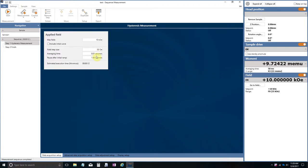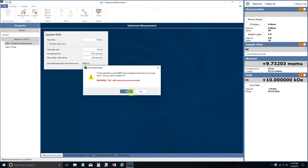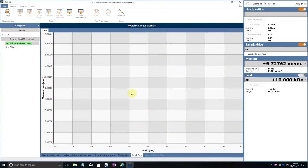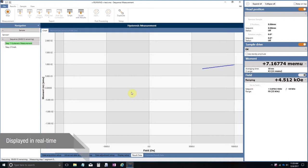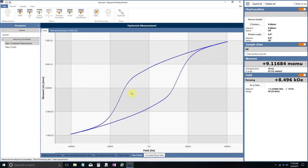And I'm going to set my average time per point to 10 milliseconds. You can see here the estimated execution time is about 12 seconds. So we'll go ahead and start this. It's done.